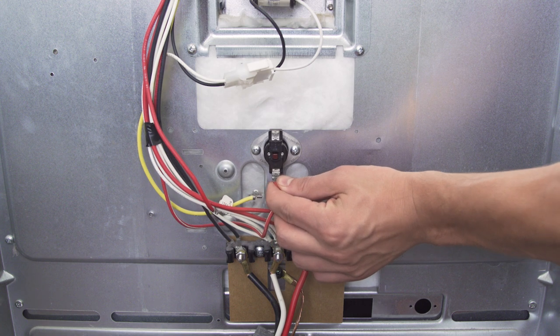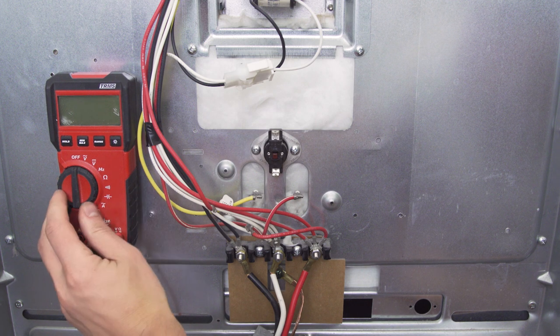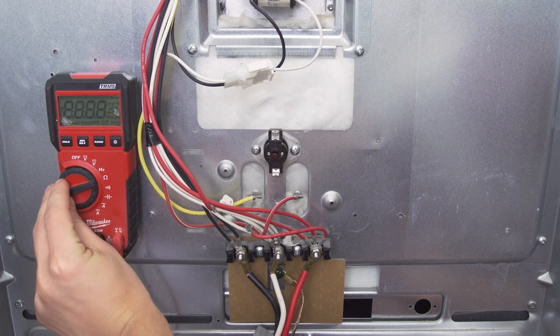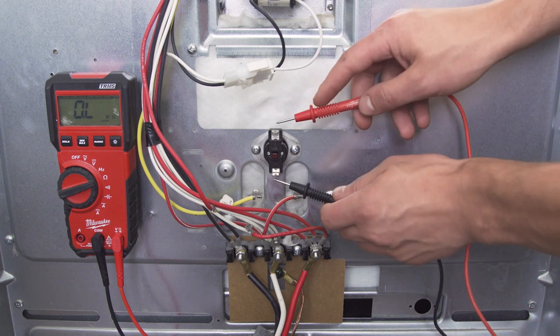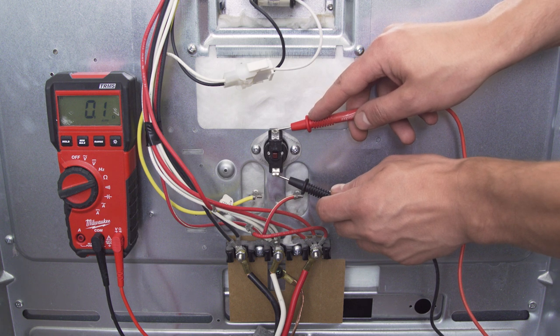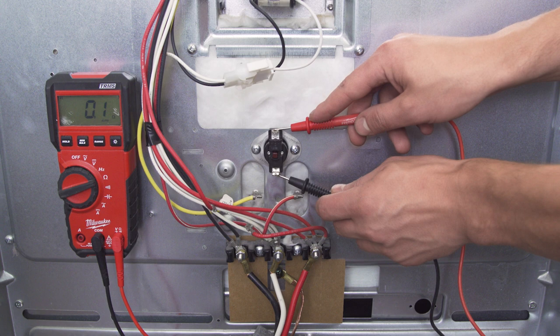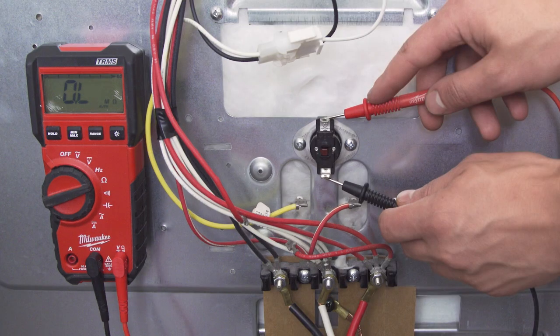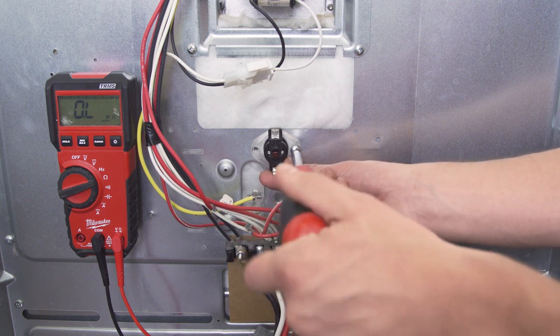First disconnect the wires. Set the multimeter to the ohms or resistance setting. Now place the probes on each terminal. If the switch is good, the multimeter should display between 0 and 1 ohm. If the multimeter doesn't show a reading or doesn't beep, then the switch is faulty and should be replaced.